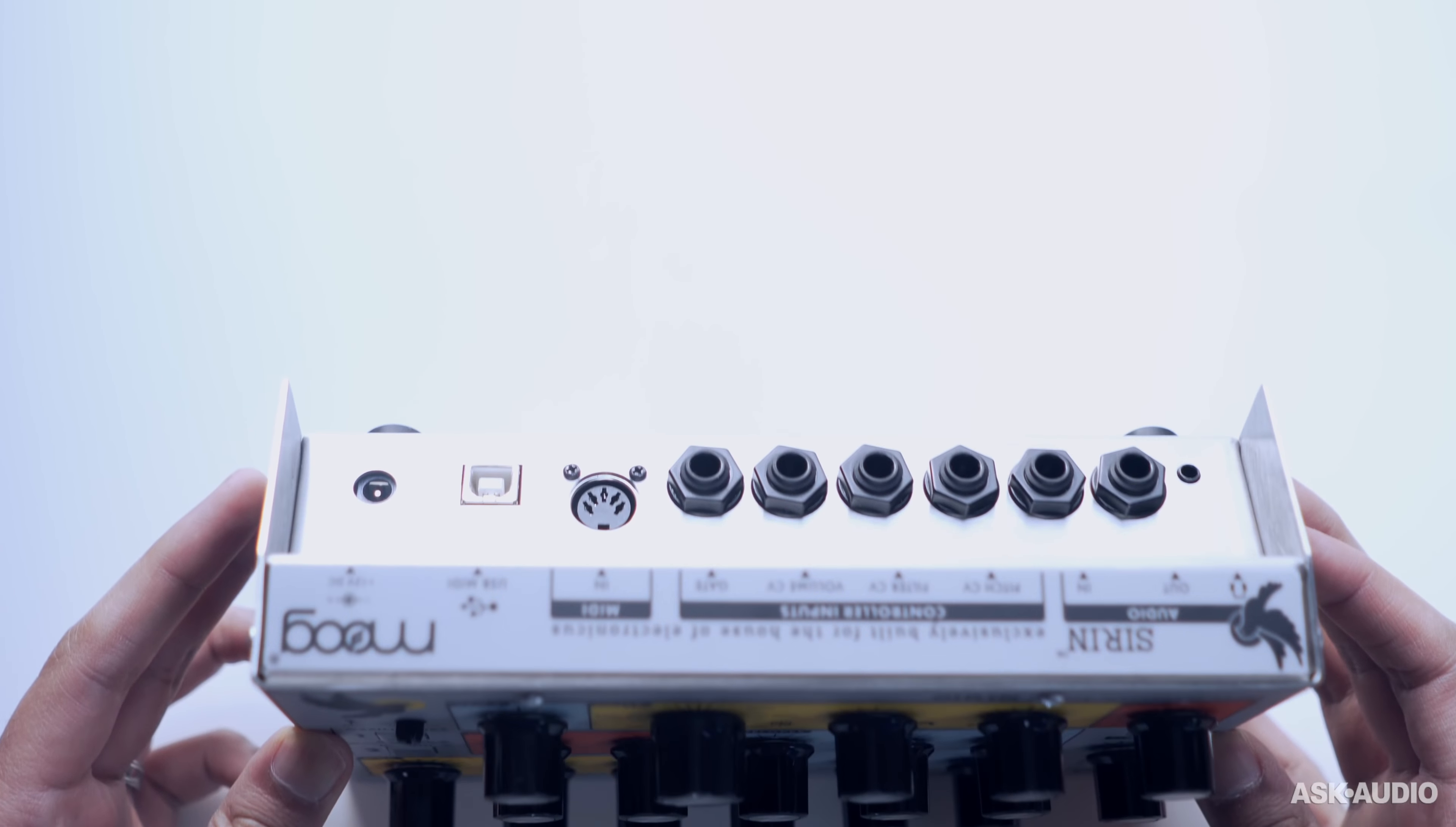So there's an eighth-inch headphone output. Right next to it, there's a standard quarter-inch unbalanced output. It does pick up some noise depending on the other devices you have around the synth. There's an audio input and four CV controller inputs, all on quarter-inch. So it might be slightly tricky to integrate it with other Eurorack gear. There's a standard 5-pin MIDI input and also USB connectivity. The 12-volt power adapter is included in the box.